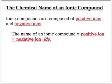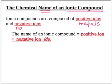We're first going to look at how we name an ionic compound. Ionic compounds are composed of positive ions — if you look on your periodic table, all of the positive ions are in the metals category — and they bond with a non-metal, which are negative ions. How we name this is: we take the positive ion's name and write that first, then we take the negative ion's name, write the beginning of it, and add -IDE at the end.